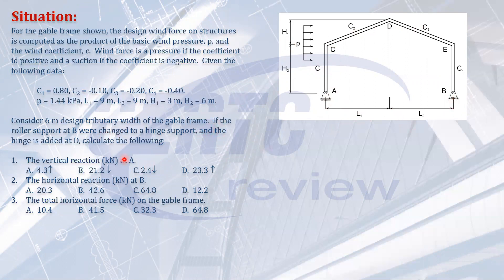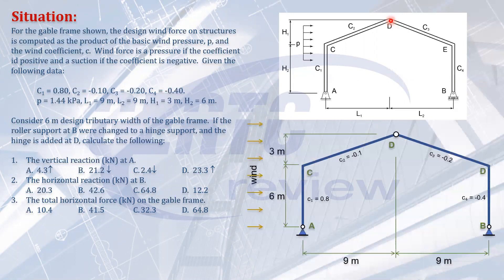Notice the drawing shows a hinge here and roller here, but the problem states if the roller at B were changed to a hinge support and a hinge is added at D. So this becomes a three hinge rigid jointed frame with hinges at A, B, and D. The task is to calculate the reactions at A and B.